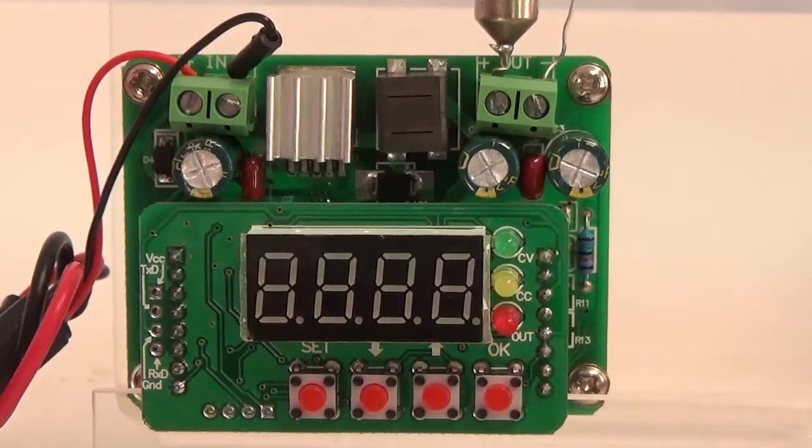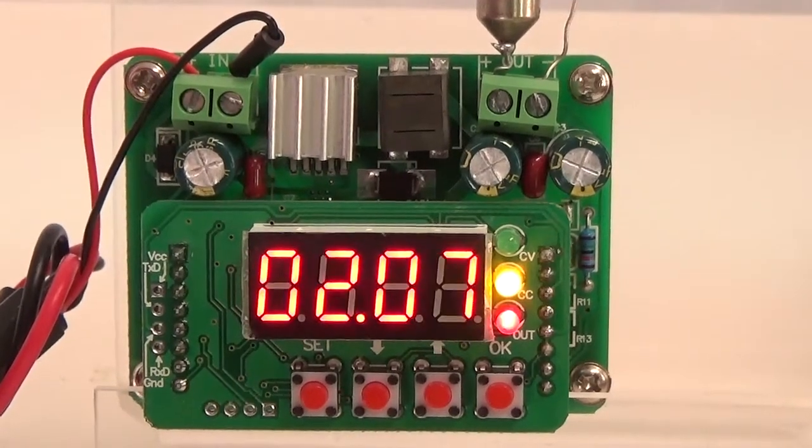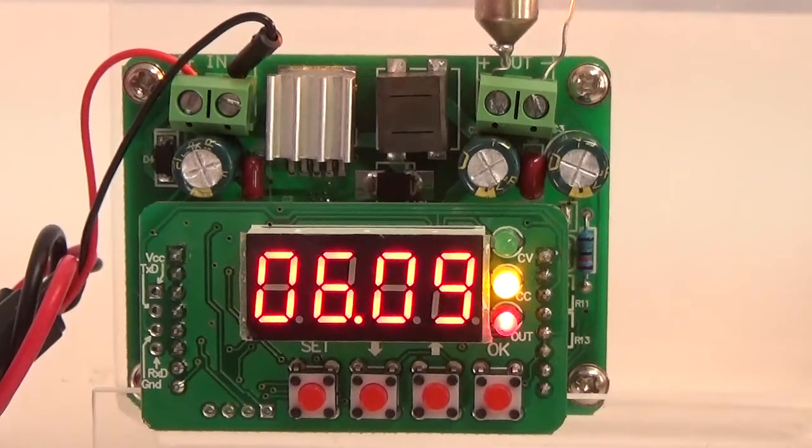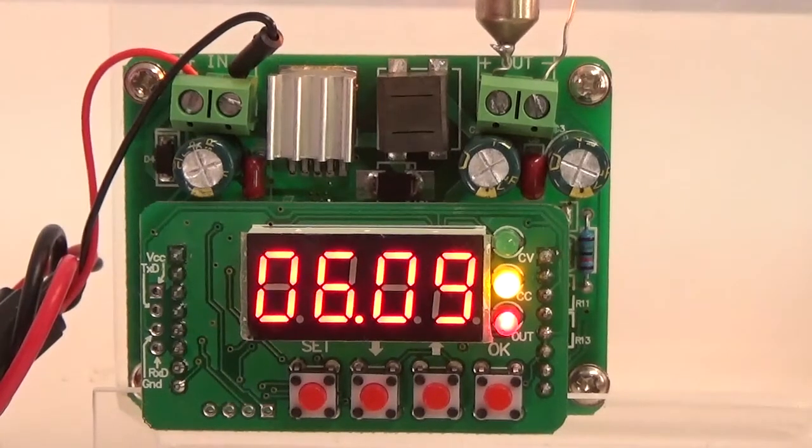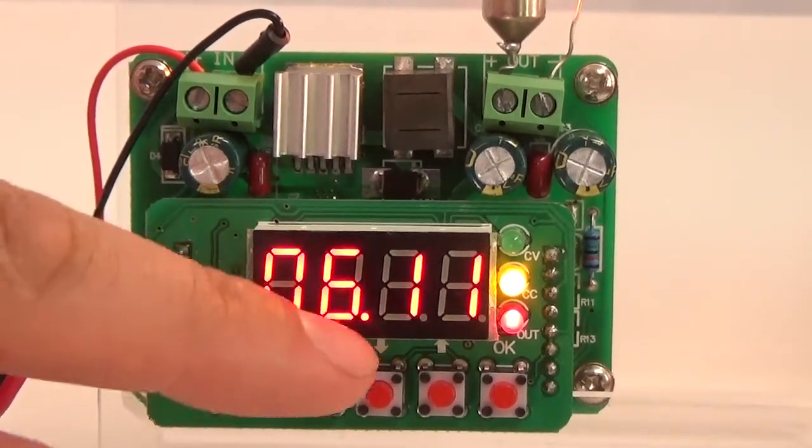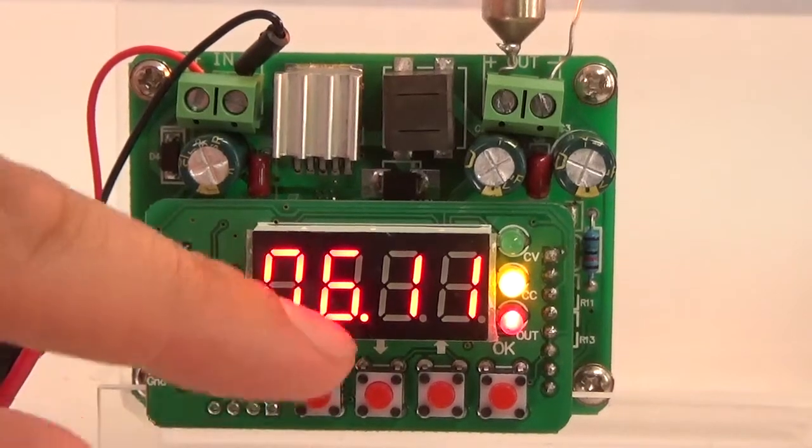So now when we connect the power each time, we have an output on the preselected voltage and current settings. And we can now also change constantly between the voltage out and the current.